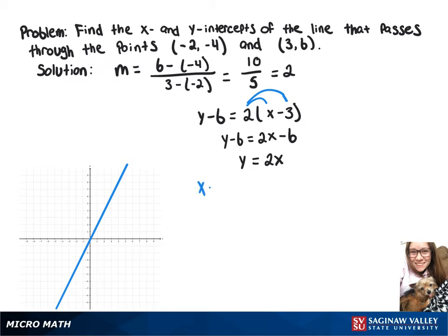So to find the x-intercept, we're going to set x equal to 0. When we do that, we get y equals 2 times 0, which just gives us y equals 0. So our x-intercept here is 0, 0.